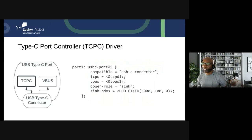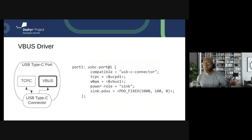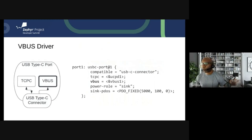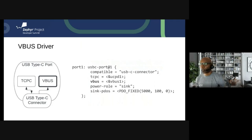The compatible parameter informs Zephyr that this is a Type-C connector. Each USB Type-C port has a port controller associated with it. The TCPC parameter in the device tree points to a driver that the Zephyr USB Type-C subsystem uses to interface with the port controller — used to get connection status, send messages, and receive messages. Each port also sinks or sources VBUS; in our case it sinks VBUS. The VBUS parameter points to a driver used to measure VBUS, and for a source port, would also be used to control VBUS.